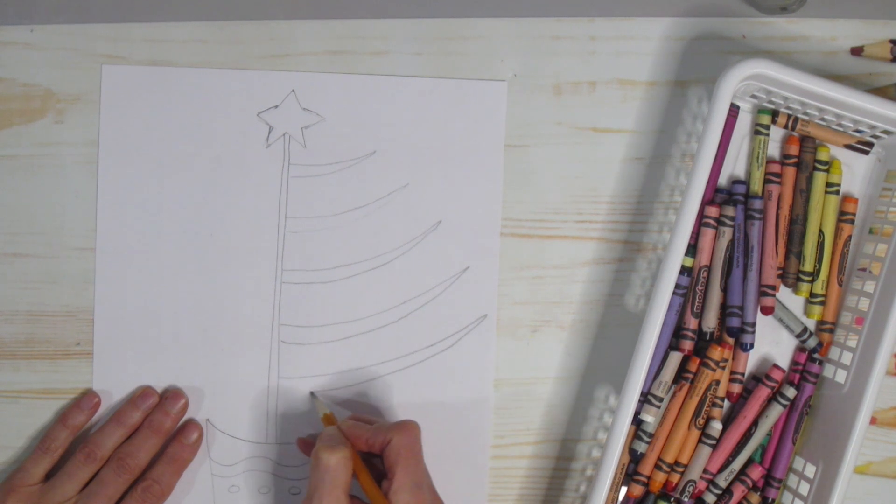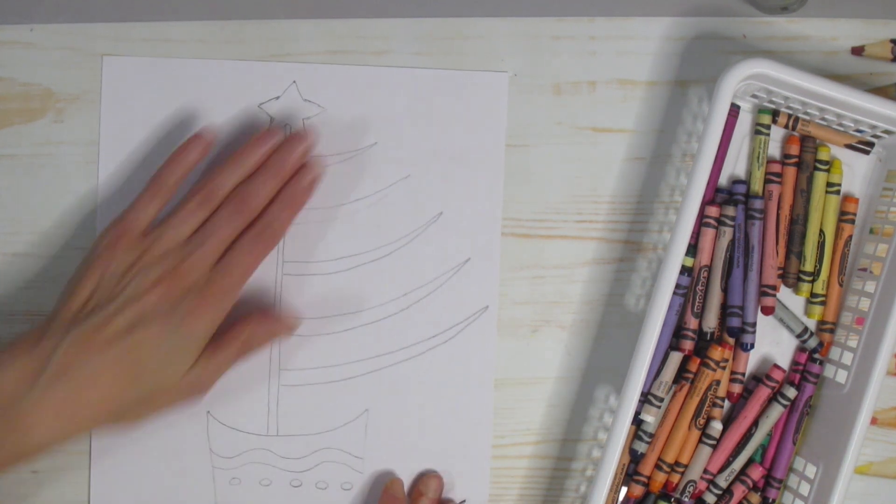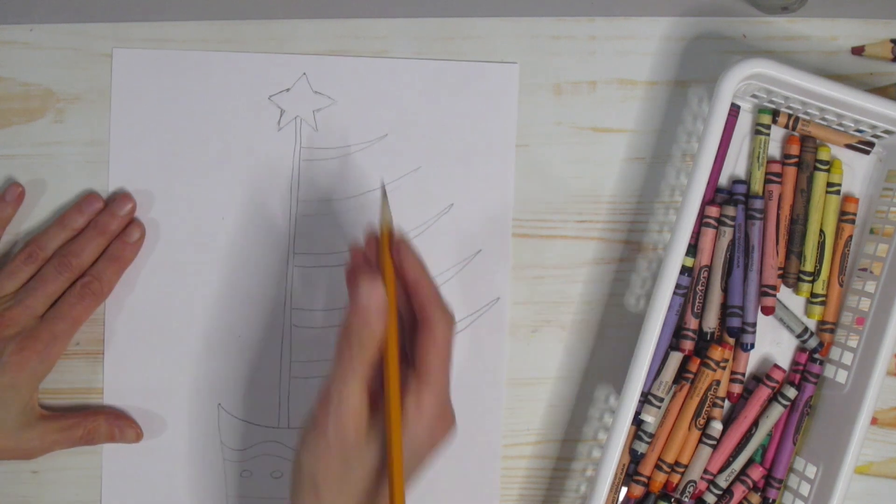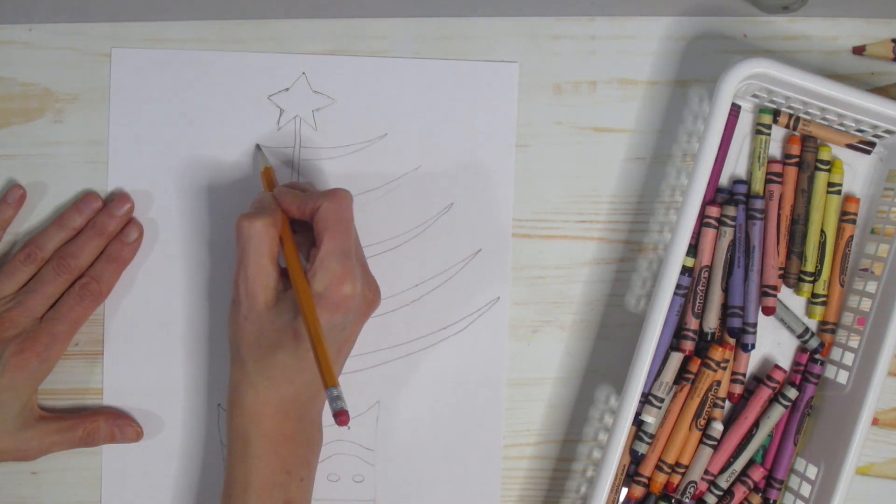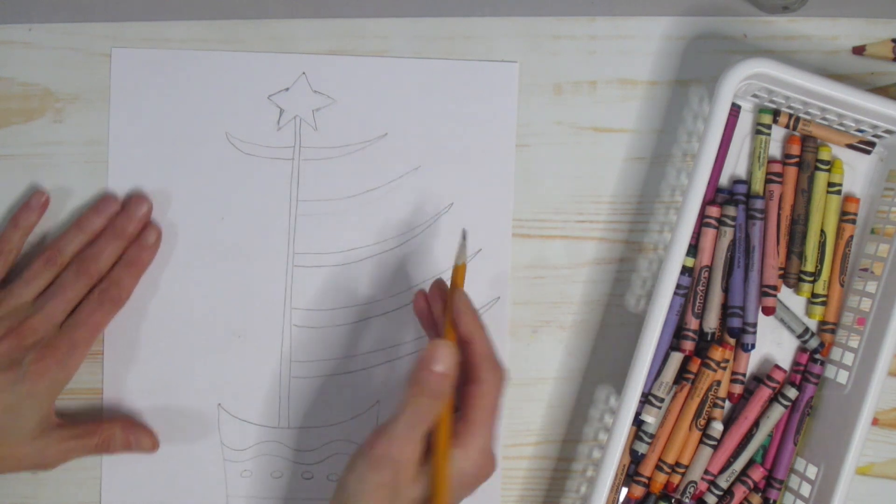Now you can see my tree is very thin. It's like a Charlie Brown tree, right? Not a lot to it, but you could do whatever you want. You could draw more or less, up to you.